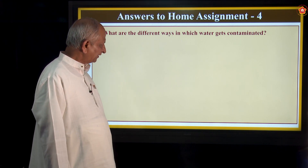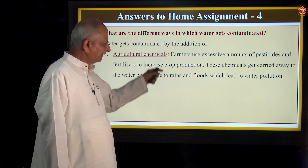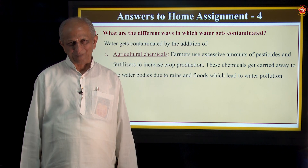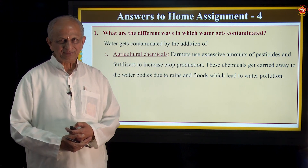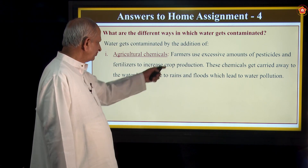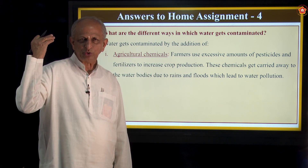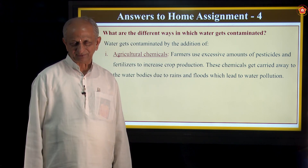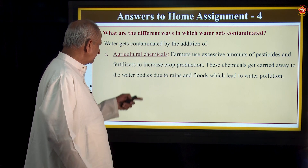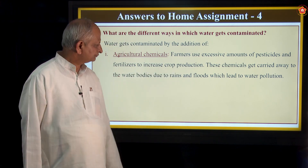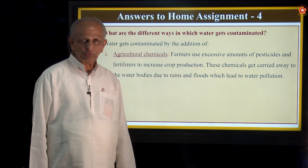Question: What are the different ways in which water gets contaminated? Water gets contaminated by the addition of agricultural chemicals. Most students are sons or daughters of farmers, so you know that while growing crops they add some chemicals. Farmers use excessive amounts of pesticides and fertilizers. In olden days they used natural fertilizers, but now all chemicals are used to increase crop production. These chemicals get carried away to water bodies due to rains and floods, which leads to water pollution.